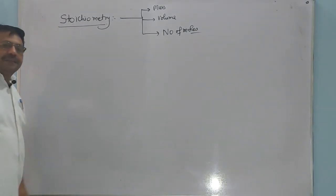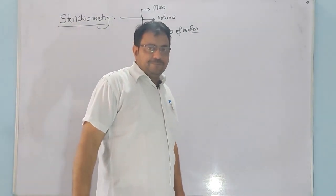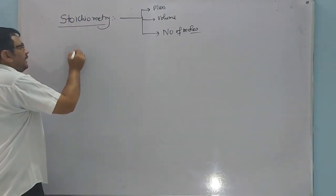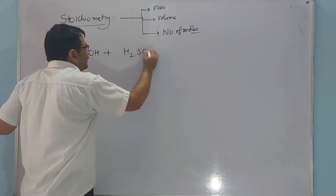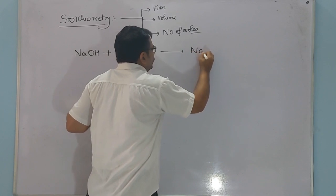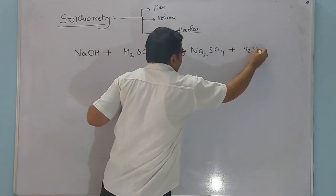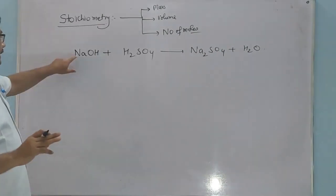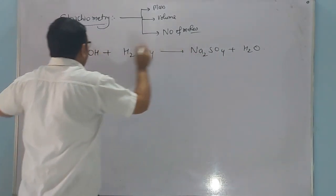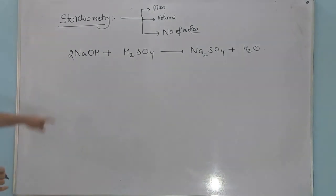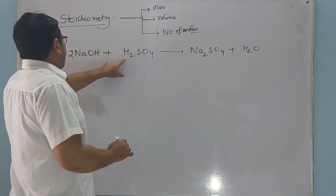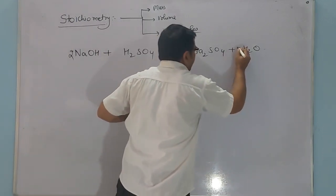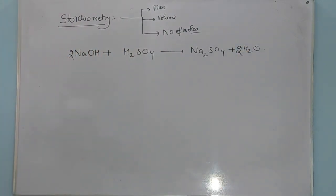इसे समझने के लिए एक chemical equation लिखना चाहिए। NaOH जब sulfuric acid से react करता है तो sodium sulfate और water बनता है। इसे balance करने के लिए यहाँ stoichiometric coefficient दो use करना पड़ेगा — दो hydrogen, दो OH, तो दो water बन जाएंगे। Now it is a balanced chemical reaction.